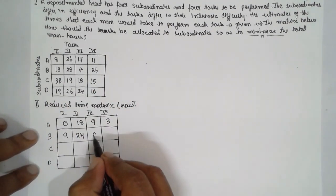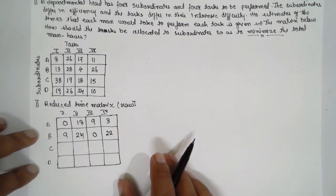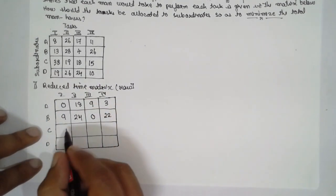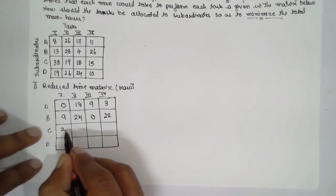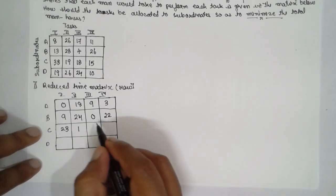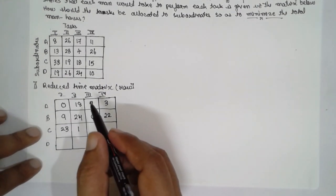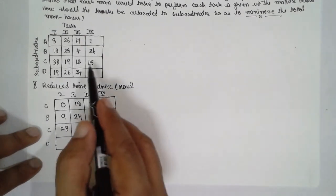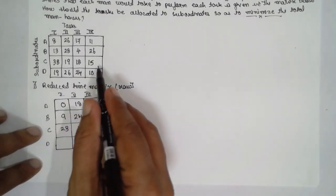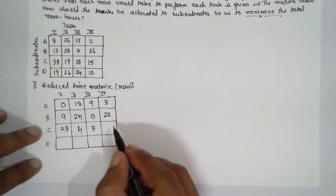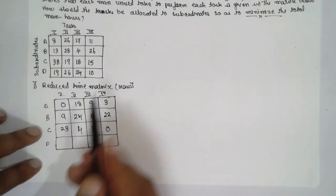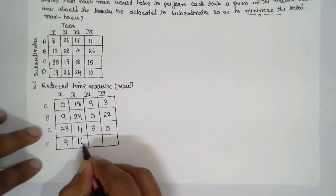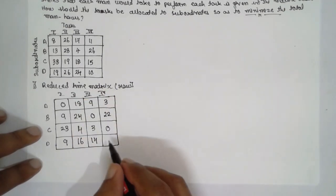For the third row, the smallest value is 15. So: 38 minus 15 = 23; 19 minus 15 = 4; 18 minus 15 = 3; 15 minus 15 = 0. For the fourth row, the smallest value is 10. So: 19 minus 10 = 9; 26 minus 10 = 16; 24 minus 10 = 14; 10 minus 10 = 0.